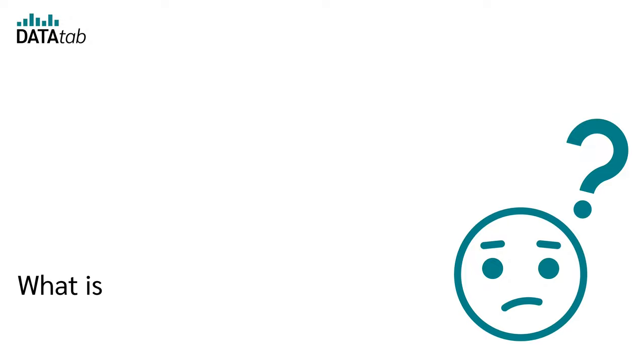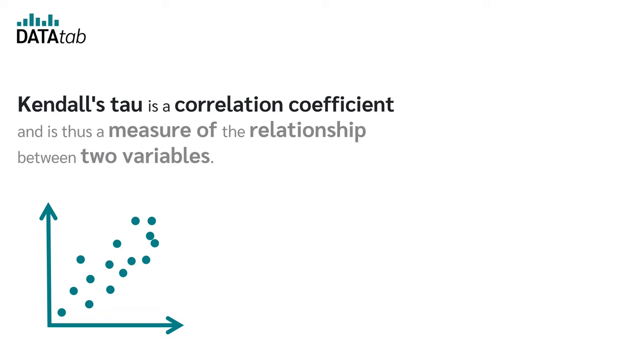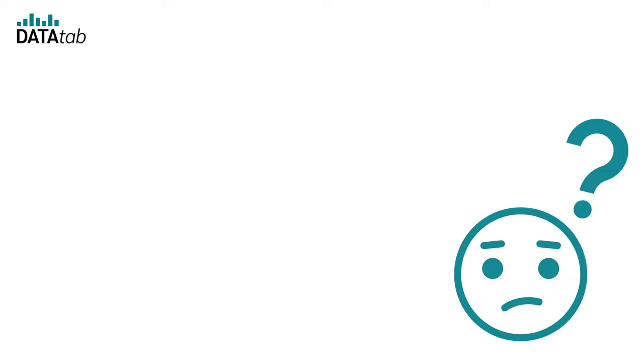What is Kendall's Tau? Kendall's Tau is a correlation coefficient and is thus a measure of the relationship between two variables. But what is the difference between Pearson correlation and Kendall's rank correlation?